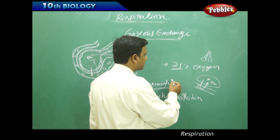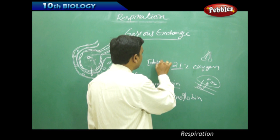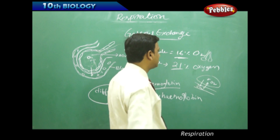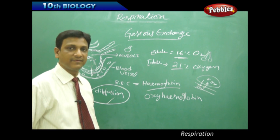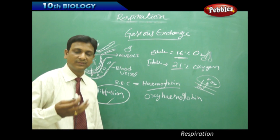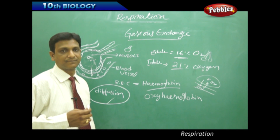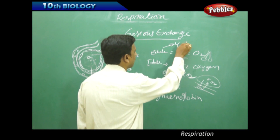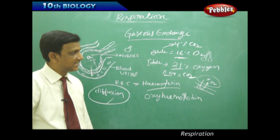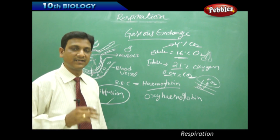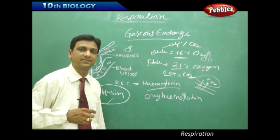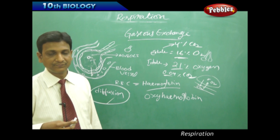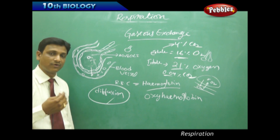Inhaled air contains 21% of oxygen, whereas exhaled air contains only 16% of oxygen — the difference is because oxygen is consumed by the organism for respiration. Inhaled air contains 0.04% of CO2, whereas exhaled air contains 4% of CO2. Both inhaled and exhaled air contain a similar amount of nitrogen, because nitrogen does not interfere with any exchanges — we have no molecules with binding capacity for nitrogen. So the nitrogen percentage remains the same, but the percentages of oxygen and carbon dioxide vary due to concentration differences between blood and alveoli.